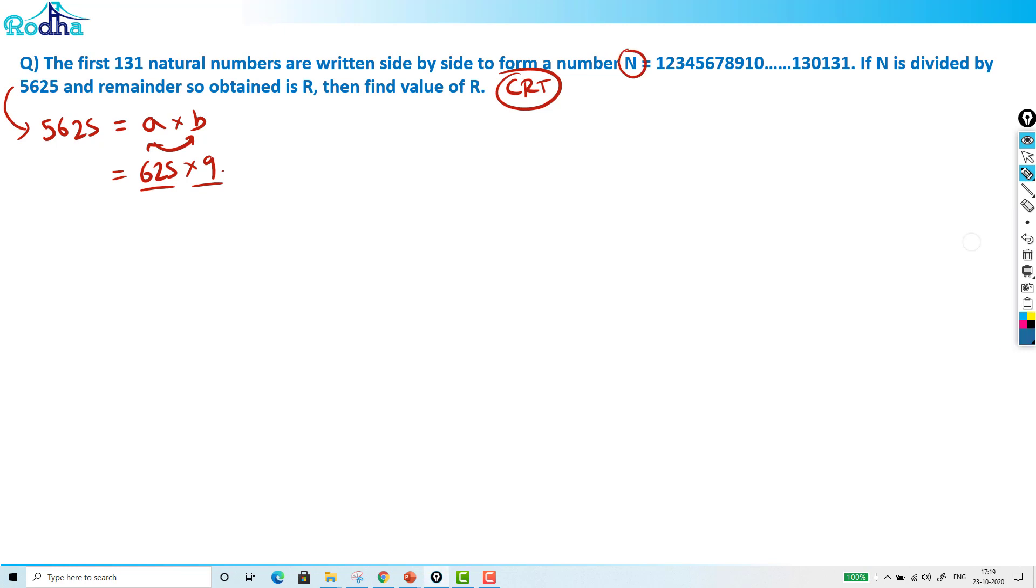If this is N, so can I write here that N divided by 625, what's the remainder? So I know this, what is 625? We know the rule for 625. 625 is 5 raised to 4. 5 raised to 4 means we only have to look for the last 4 digits.